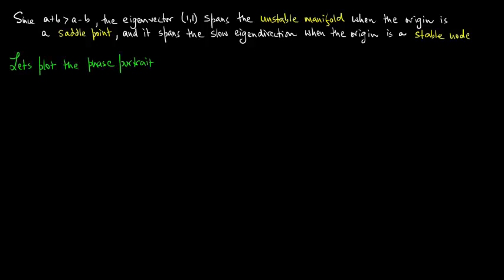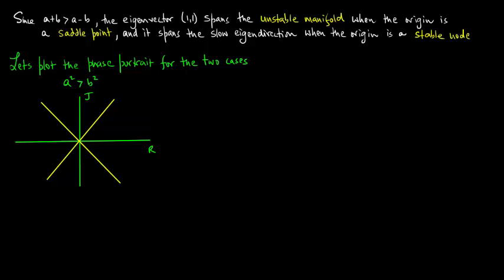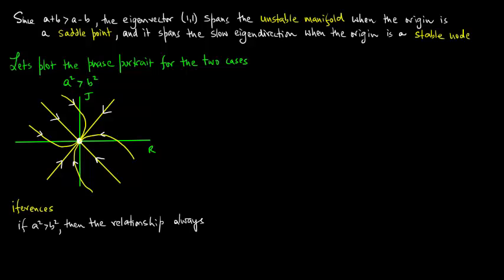So let's plot the phase portrait for the two cases. First consider a squared greater than b squared, where we plot j versus r. And that's a stable node. So now let's make some inferences. If a squared is greater than b squared, then the relationship always fizzles out due to mutual indifference.